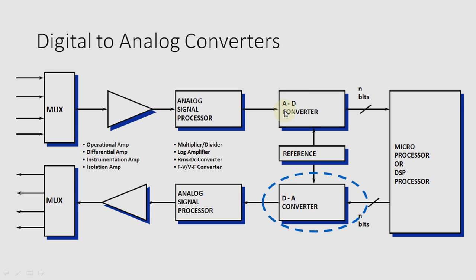Then this signal goes to an AD converter, which we previously studied. Here the analog signal is converted into digital signals as n number of digital bits. These then go to a microprocessor or DSP processor, which generates an output digital signal.